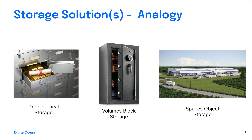A good way to start this presentation is with an analogy. At DigitalOcean we have three different types of storage: local droplet storage, block storage, and object storage. Droplet local storage can be thought of as a locker in a bank — it's fixed, you don't have a lot of storage options there, and if you need to change storage at the droplet level, you'd probably have to go to a bigger droplet or think of other solutions. Your options are pretty limited there.